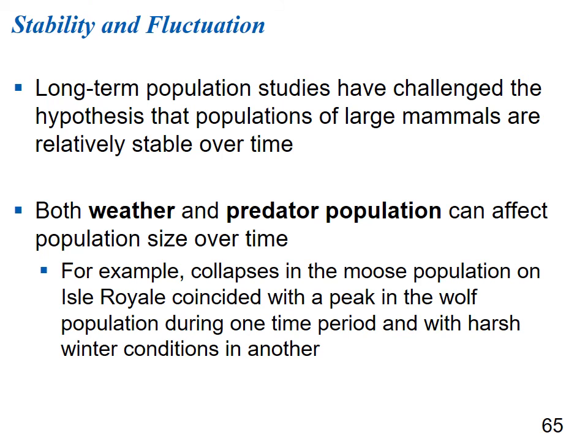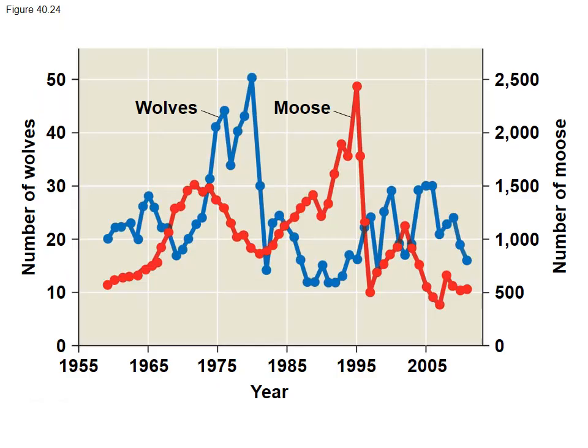Long-term population studies have challenged the hypothesis that large mammal populations are stable over time. Both weather and predator populations affect population size. For example, collapses in moose populations on Isle Royale coincided with a peak in the wolf population during one period and with harsh winter conditions in another. The wolf-moose relationship shows that sometimes an increase in moose leads to an increase in wolves, but it doesn't always pan out that simply.